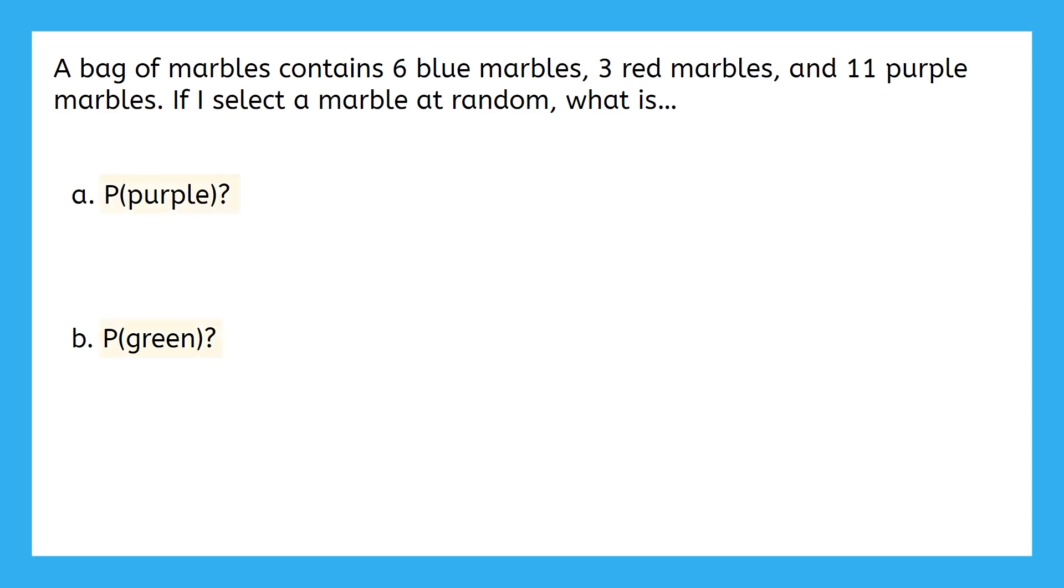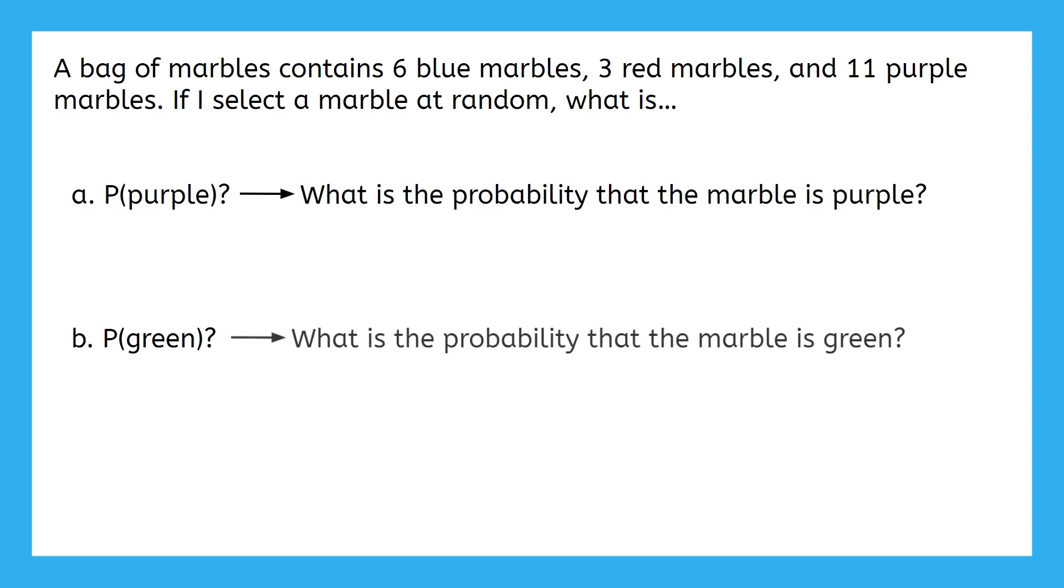Oh, this is new notation for us. When you have capital P with something in parentheses next to it, it means the probability of that criteria. So part A is asking, what is the probability that the marble we pick is purple? And part B is asking, what is the probability that the marble is green? You can read them as P of purple and P of green.